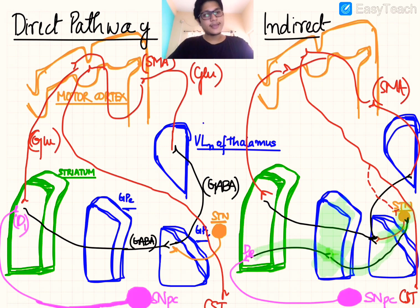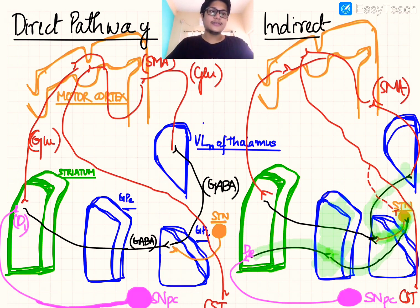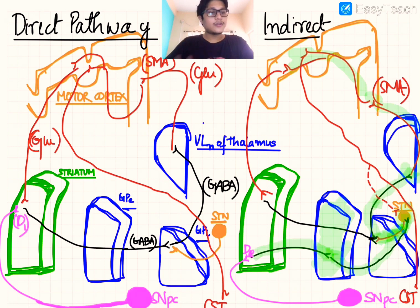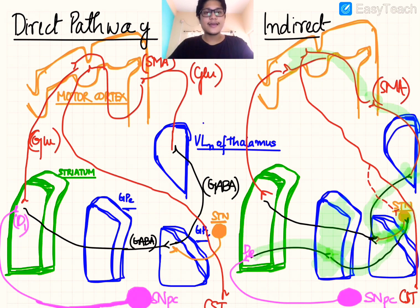When the subthalamic nucleus is disinhibited, it excites the globus pallidus internus. The GPI then sends inhibitory signals to the ventrolateral nucleus of thalamus. The glutamatergic efferent to the SMA stops, and the motor cortex is inhibited. In summary: striatum inhibits GPe → GPe no longer inhibits STN → STN excites GPI → GPI inhibits VLN → VLN no longer excites SMA → primary motor cortex is inhibited.